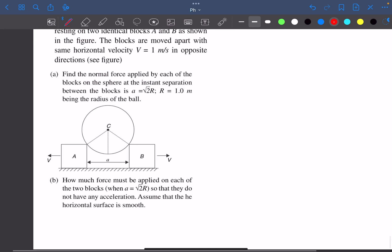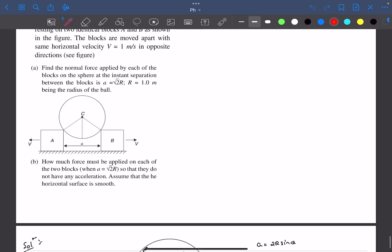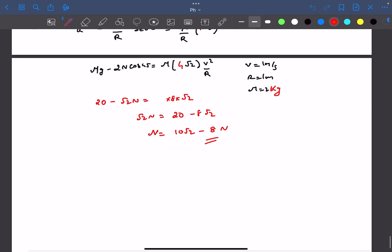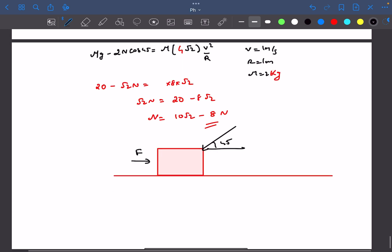Option number 2 asks how much force must be applied to each of the two blocks so that they do not have any acceleration. I guess they're asking at this particular instant when theta is 45 degrees. If we look at the FBD of the block, the normal reaction will be acting at an angle of 45 degrees. So the external force we must apply in the horizontal direction must be N cos 45, which would be 10 minus 4 root 2 N.